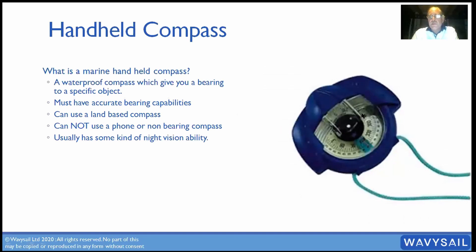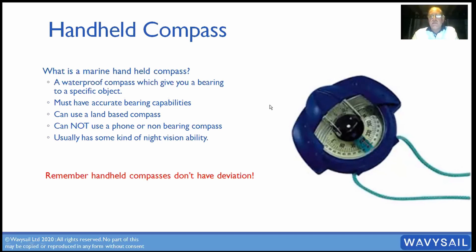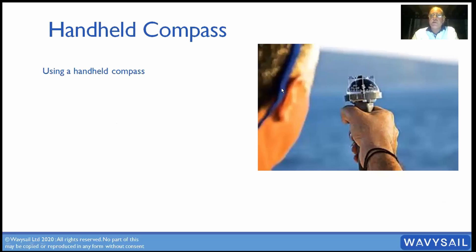You'll notice marine handheld compasses have phosphorescent material around them — put a torch on that and you can use it at night. It glows like a watch, very brightly, and they're very easy to read. Remember, handheld compasses don't have deviation. It's got a sighting line and an accurate sight to be able to take a bearing on something.